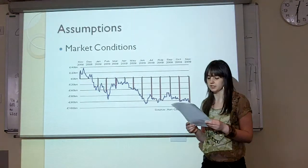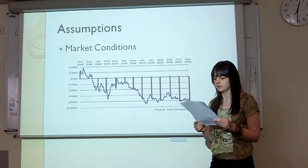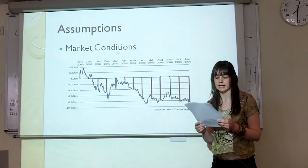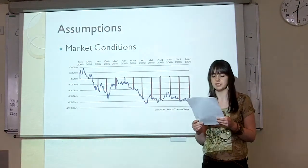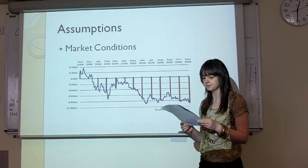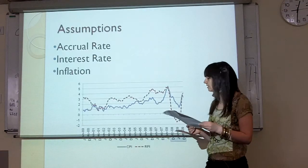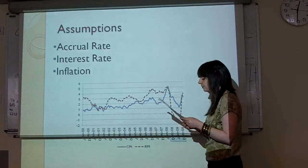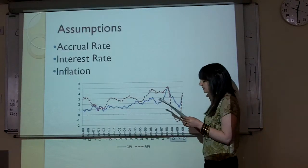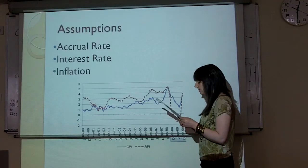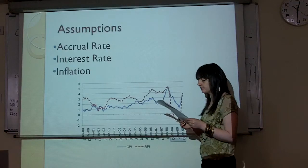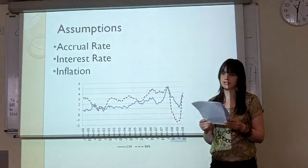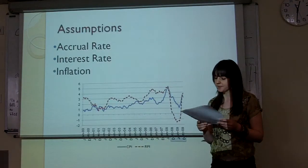Due to severe underfunding in the majority of schemes today, we as actuaries will be exhibiting high levels of prudency when constructing our assumptions. First of all, we have used an accrual rate of 1/60, which means that for every year a member is entitled to a pension, they will receive 1/60th of their total salary.